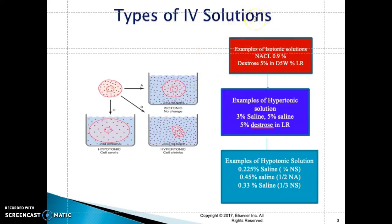In what situation might the doctor order an isotonic solution? Let's say you have a patient who comes in having nausea, vomiting, and diarrhea for three days. You might anticipate that the doctor will order an isotonic solution for this patient secondary to dehydration.